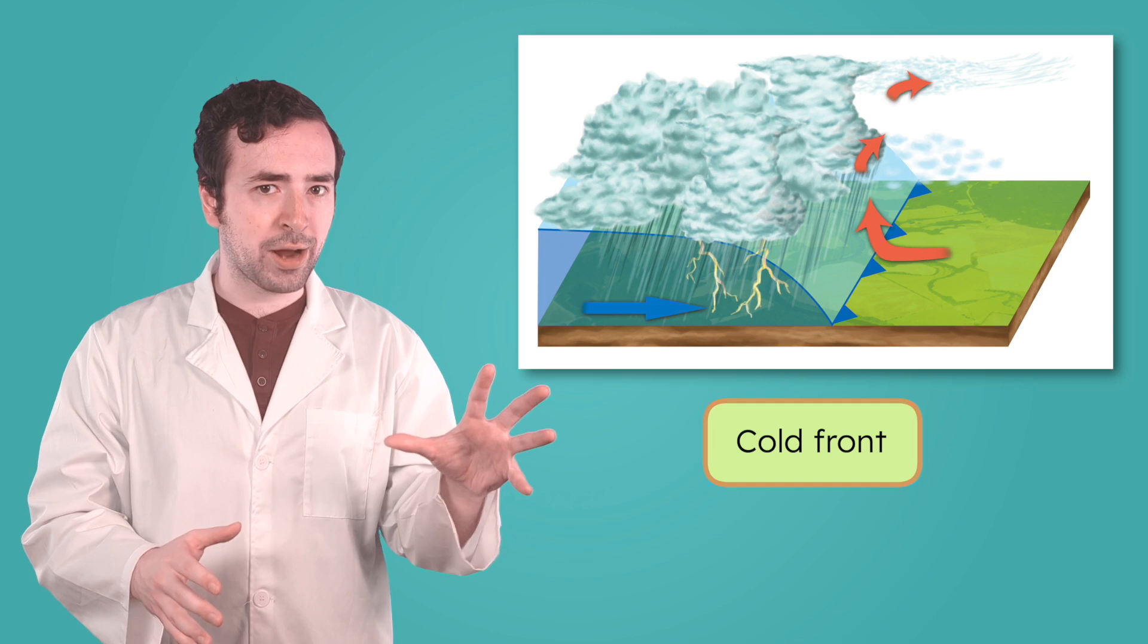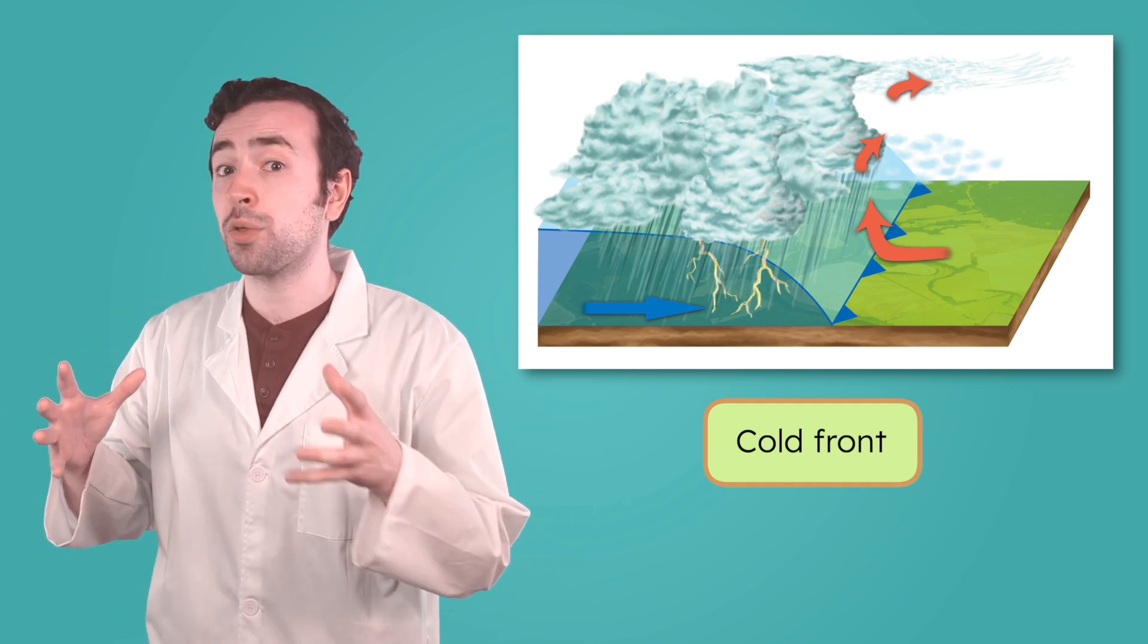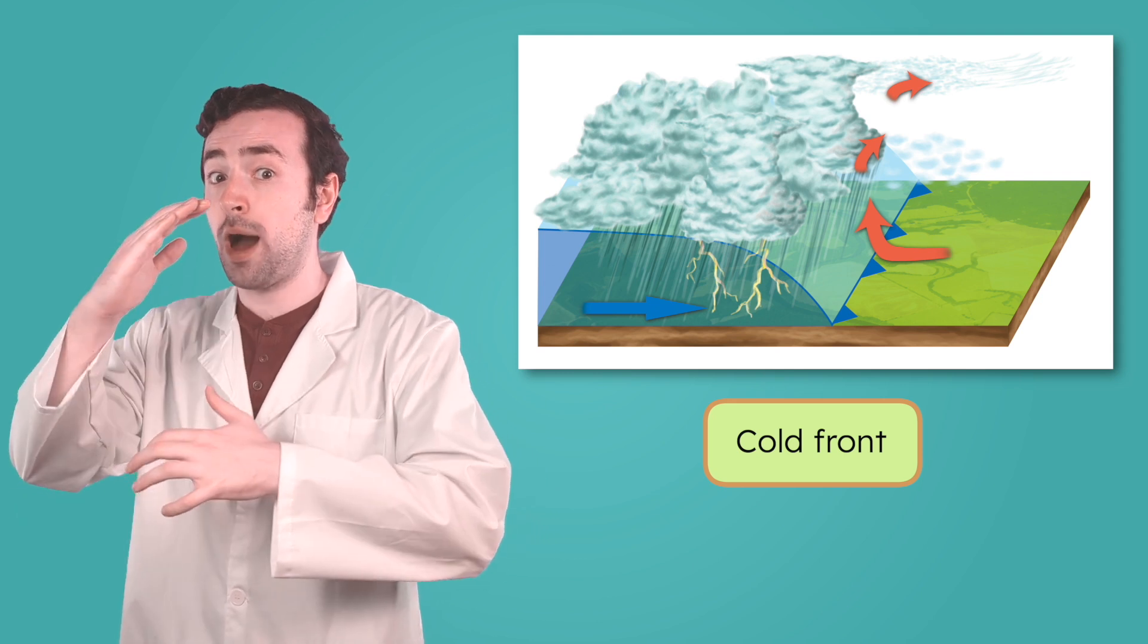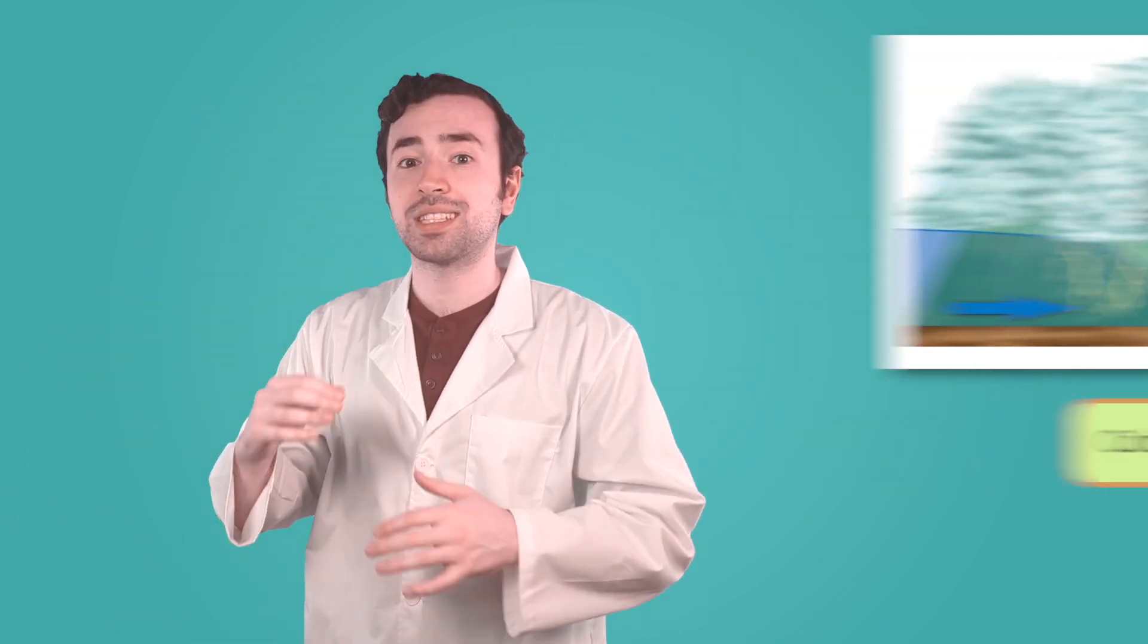At a cold front, a cold air mass moves into an area with warmer air. Since cold air is heavier, it pushes the warm air up much more quickly. This can cause thicker clouds, heavy rain, thunderstorms, or even snow. After a cold front passes, the weather usually feels cooler, and the skies can clear up quickly.